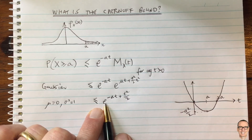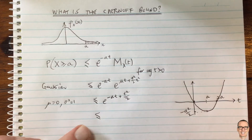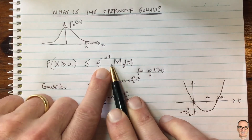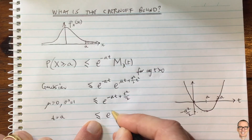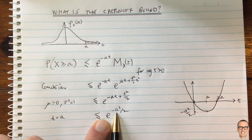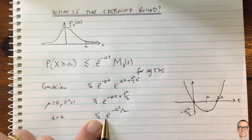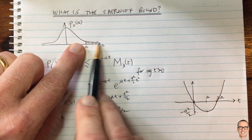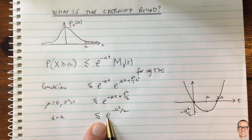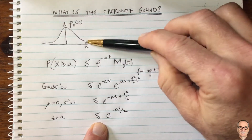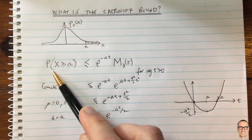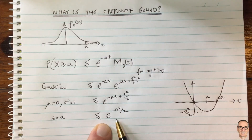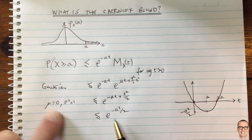So the tightest Chernoff bound for the standard normal Gaussian is obtained by choosing t equal to a, giving a bound of e to the minus a squared over two. For the value a you're interested in, this gives an upper bound on the probability of getting an outcome larger than a, without having to evaluate the difficult integral. If you have the moment generating function, you can always compute this bound on the tail probability.